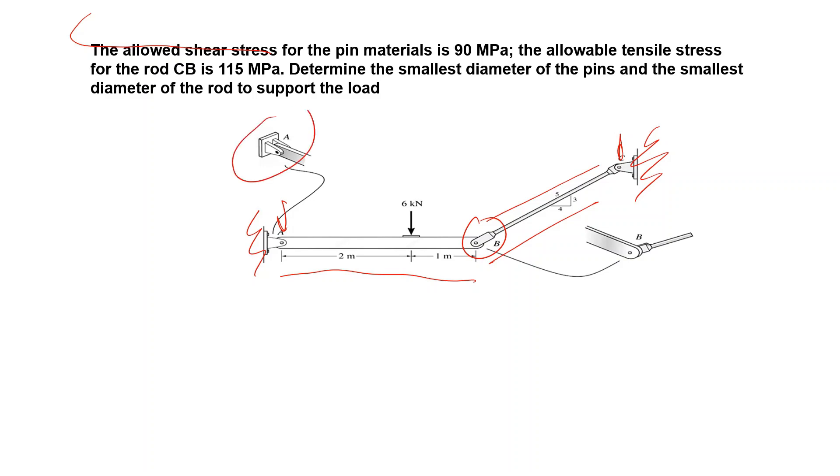In point A the pin is double-sided so the shear load is carried by two sections, but in point B the connection is only one-sided.